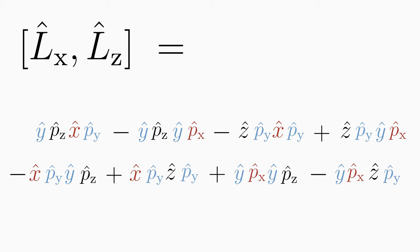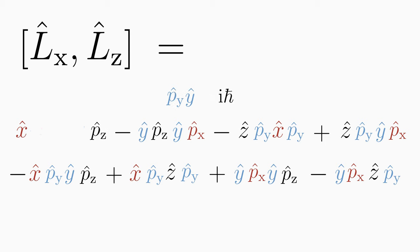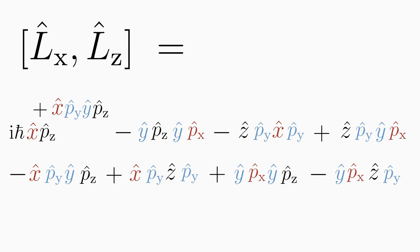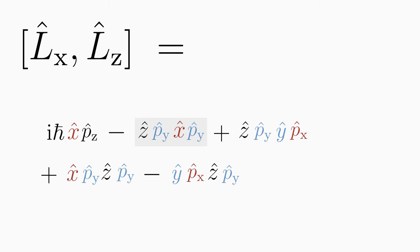Then we swap the operators so that some terms cancel out. In the first term, we can put x at the beginning because x commutes with y as well as with p̂z. We can also put the operator p̂y in front of p̂z, but not in front of y, because the commutator of y and p̂y is not zero — it is equal to ih-bar. Therefore, we must replace y·p̂y with ih-bar plus p̂y·y. Next, we multiply out the bracket. Several terms cancel out: this term cancels, and operators in other terms can be interchanged to eliminate further terms.